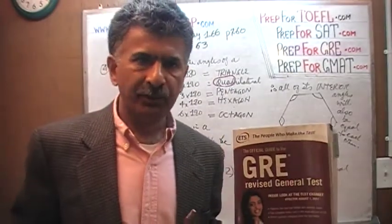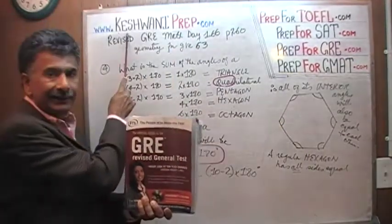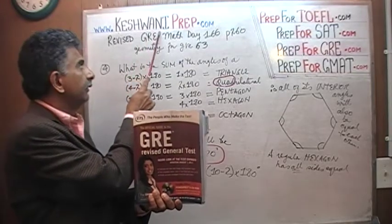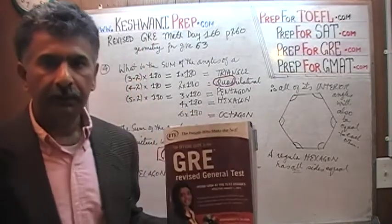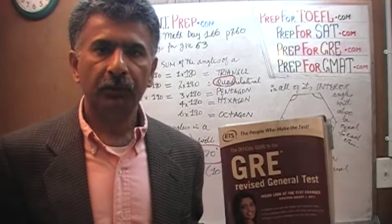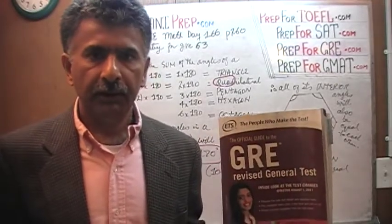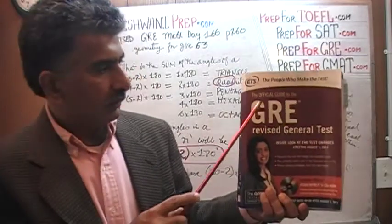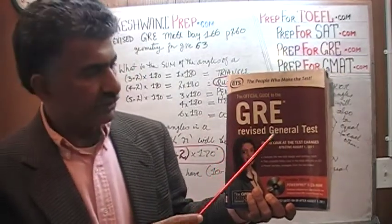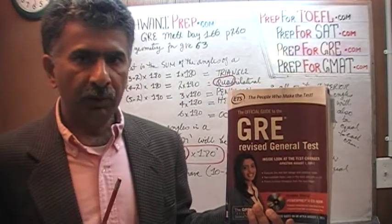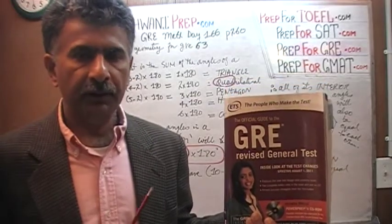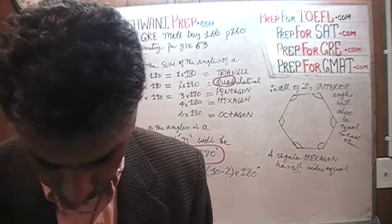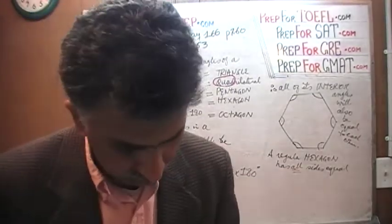Hello, my name is Keshwani — that's K-E-S-H-W-A-N-I. We are here because we want to prepare for the GRE. We have been solving GRE math problems out of this book, the Official Guide to the GRE Revised General Test. If you do not own this book already, purchase one immediately. You are going to need it. The problem we are about to solve is the one on page 260.